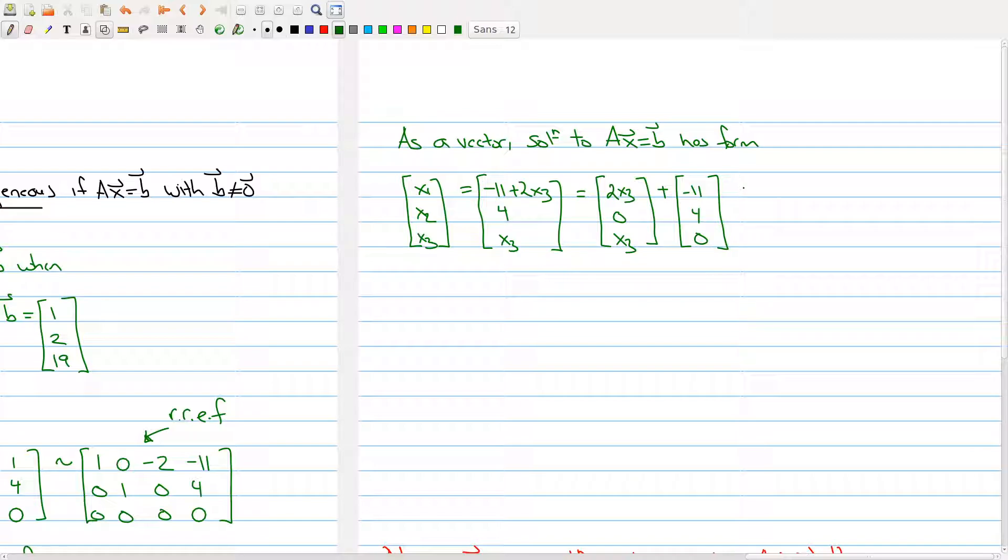I can take this one step further and factor out the x3. So I have 2, 0, 1, plus -11, 4, 0, where x3 is any real number. This gives me a complete description of all solutions to my non-homogeneous system.